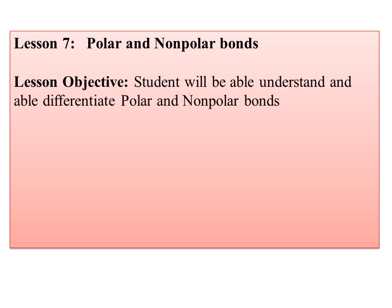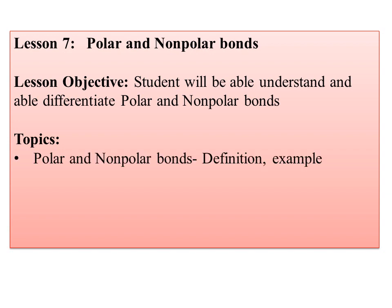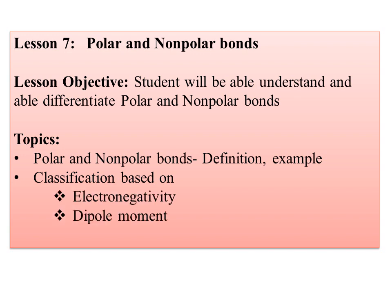In lesson number seven, we are going to study polar and non-polar bonds. Depending upon the type of bond, different types of reaction mechanisms can take place. Bond cleavage and rate of reaction depend on whether the reactant is polar or non-polar. Many parameters will differ for different bonds in organic compounds. The student will be able to understand and differentiate between polar and non-polar bonds based on electronegativity and dipole moment. We will calculate and estimate the dipole moment, and based on those values, determine whether the bond is polar or non-polar.